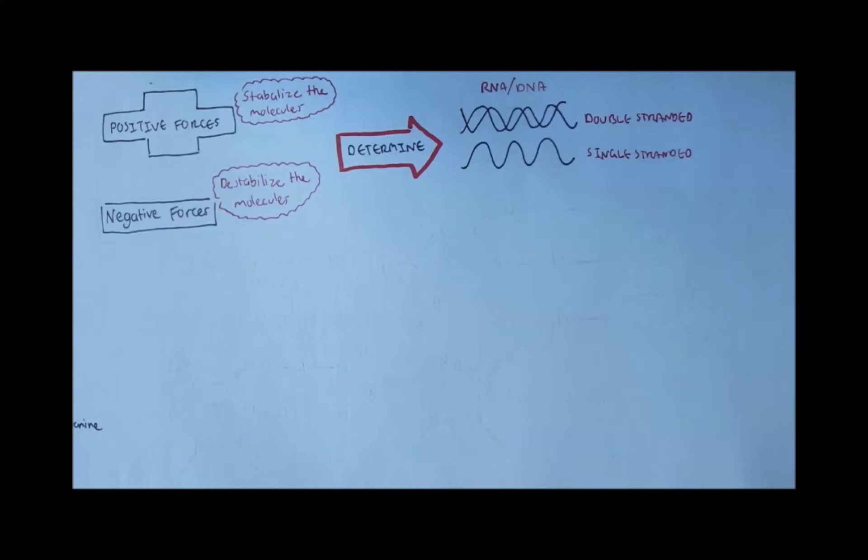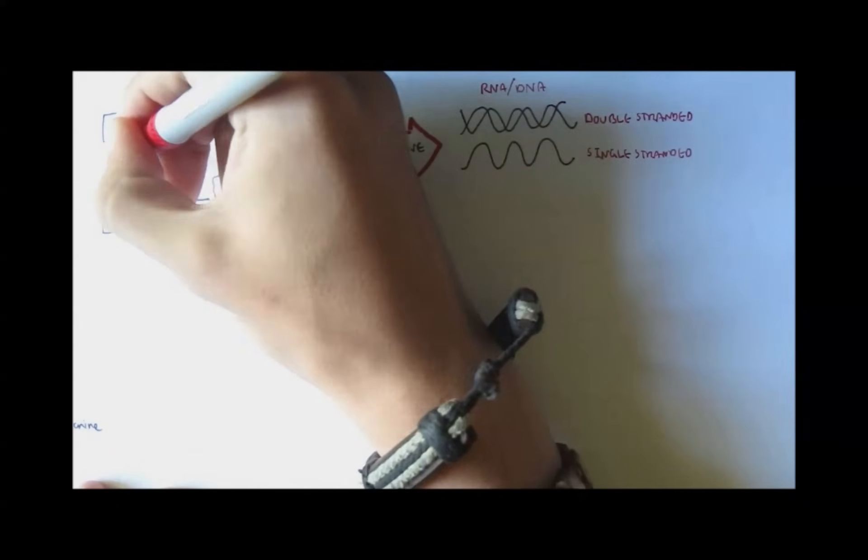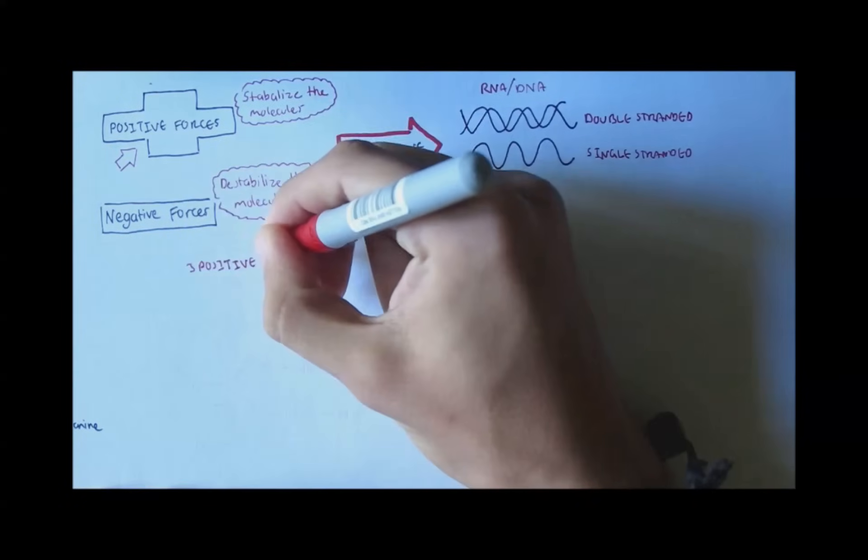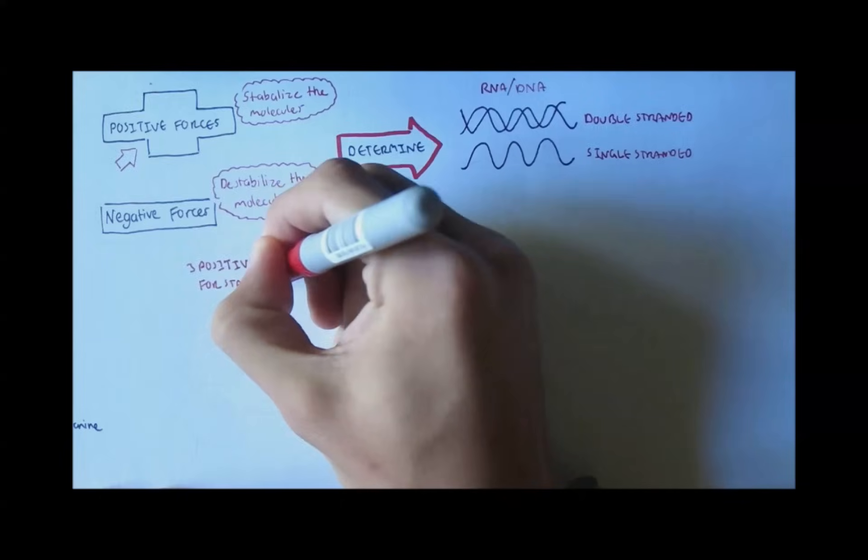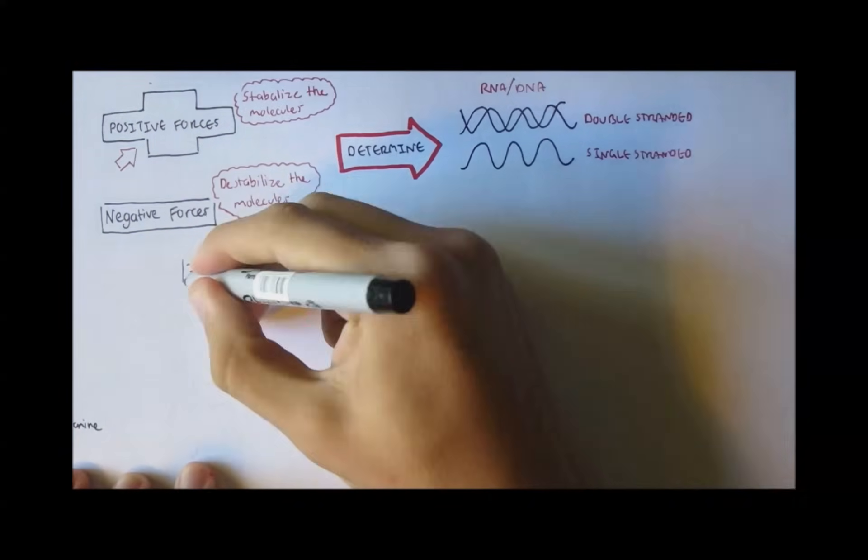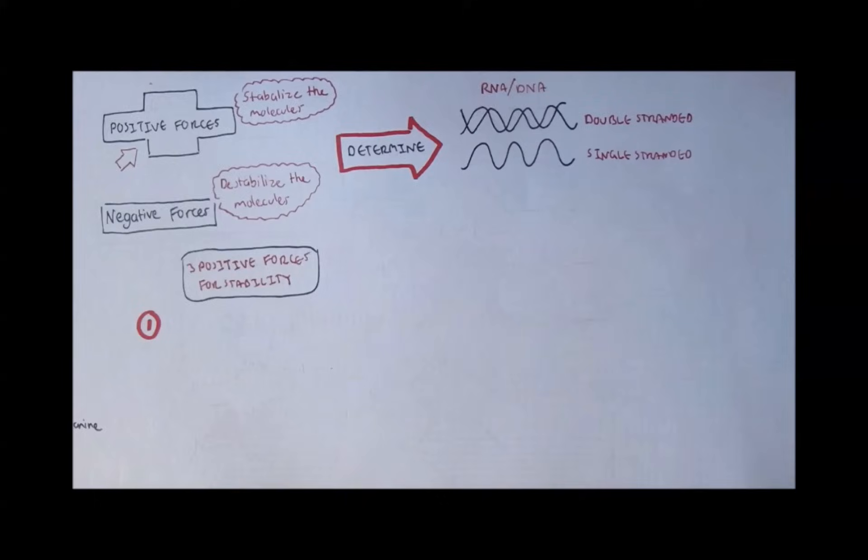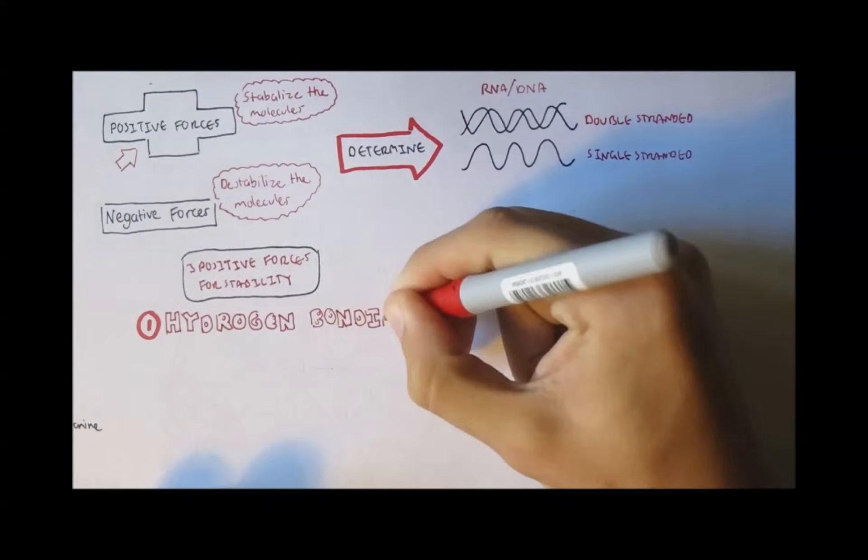If you think about it, if the structure isn't stable it will be single-stranded because it can't hold a stable double-stranded structure. And if there are enough positive forces then a double-stranded DNA structure can occur. So let's look at the positive forces first. Now there are three main types. Positive force number one is hydrogen bonds.